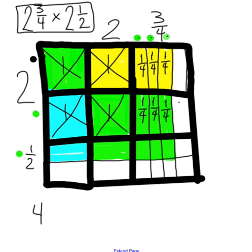In the very bottom box, in that third column, there are three smaller pieces. To determine what fraction each piece represents, count the total pieces in the box: one, two, three, four, five, six, seven, eight. Since there are eight total pieces, each of those green boxes represents one-eighth.